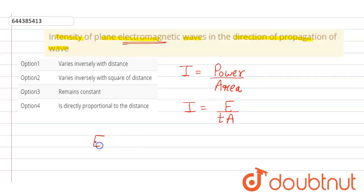And energy is inversely proportional to r squared, so this implies that intensity of electromagnetic wave is also inversely proportional to r squared. So that means option two is correct. Thank you.